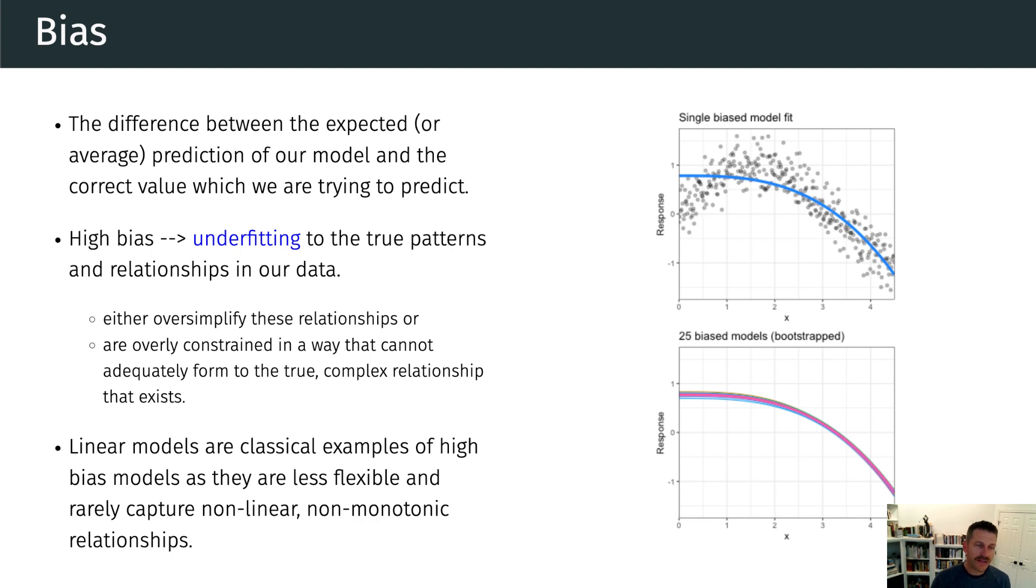So we can think of these models with high bias as underfitting the true patterns and relationships in our data. And this is often because high bias models either overly simplify these relationships or are constrained in a way that they cannot adequately form to the true complex relationship that exists within our data.